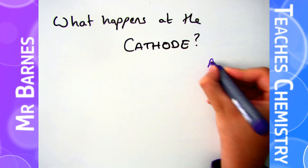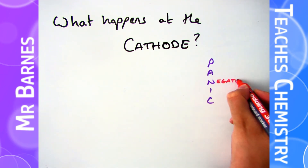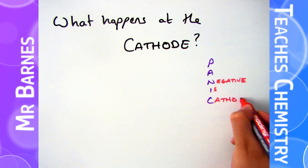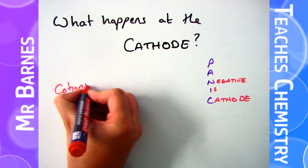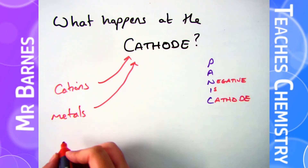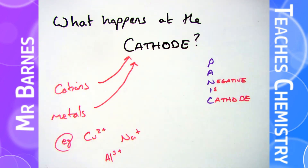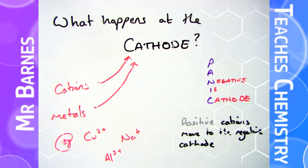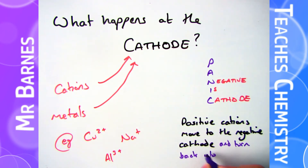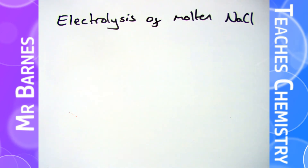What happens at the cathode is pretty much exactly the opposite. Positive anode, negative is cathode — so your cathode is negative. Therefore the positive ions, your cations, which are always metals, are going to move towards it. When they get there, they turn back into their metals — so they're no longer in solution; they'll turn back into copper, sodium, and aluminium, for example.